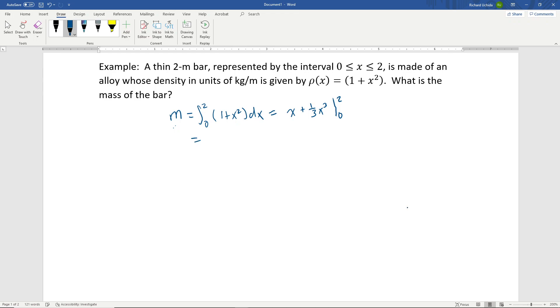Plugging in 2, we get 2 + 8/3. If we plug in 0, we get 0 for both terms. So 2 + 8/3 equals 6/3 + 8/3, which equals 14/3. That's the mass of that bar.